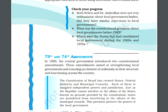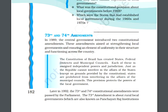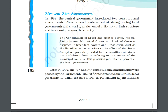Local Self-Government is related to some amendments in our constitution. The central government in 1989 introduced these two constitutional amendments, and later in 1992, the 73rd and 74th constitutional amendments were passed by the parliament.